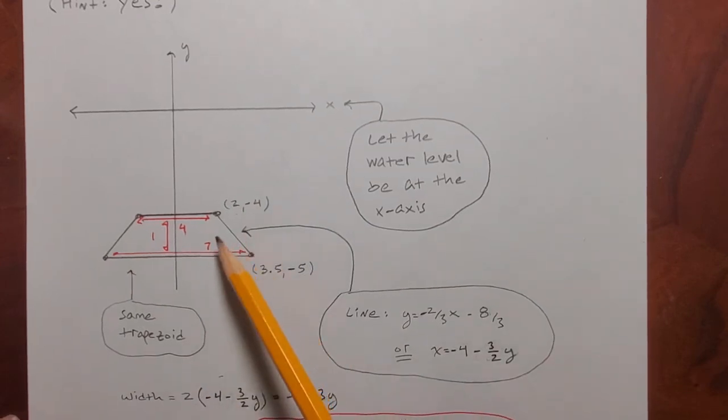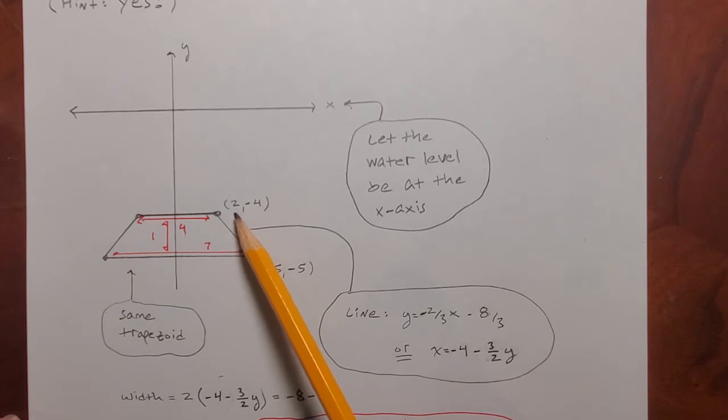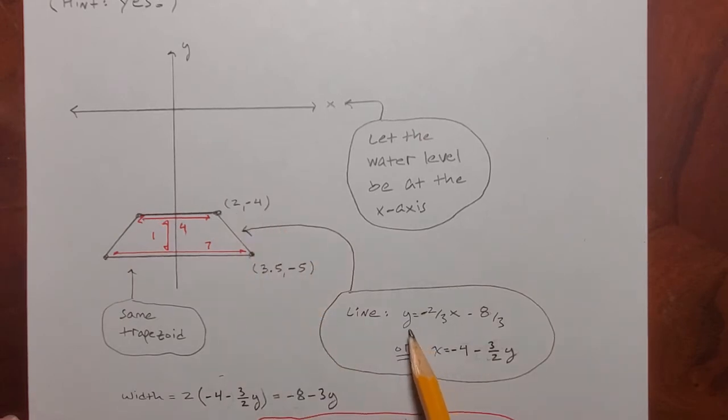And so you use what you learn in algebra. You find the equation of a line that goes through the point 2 and negative 4 and 3.5 and negative 5. That turns out to be y is negative 2 thirds x minus 8 thirds. Okay.